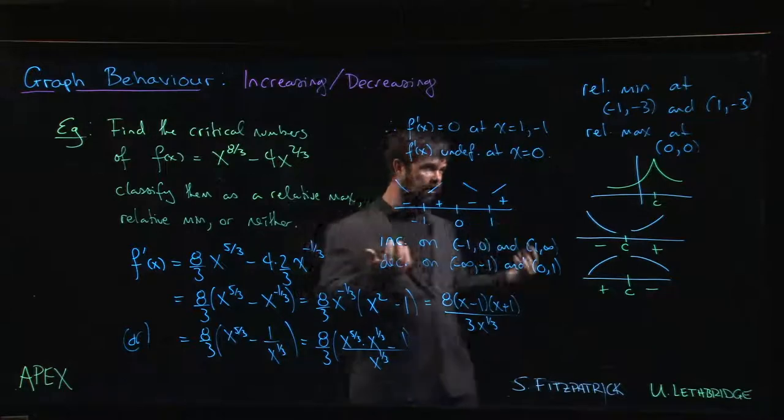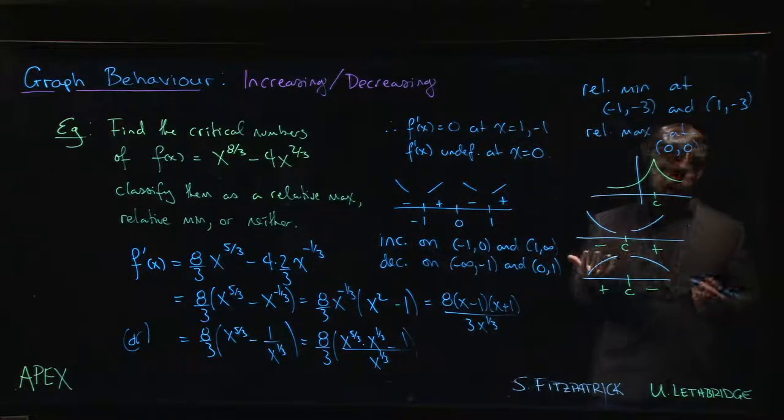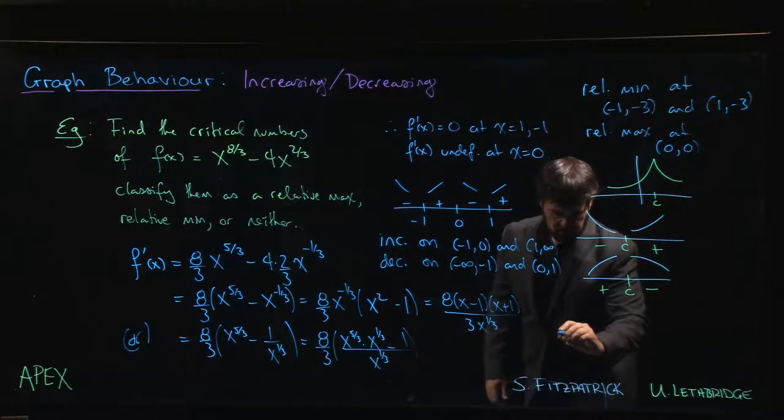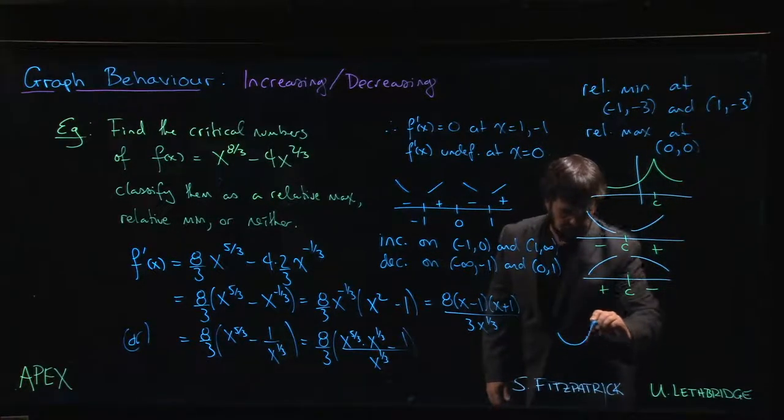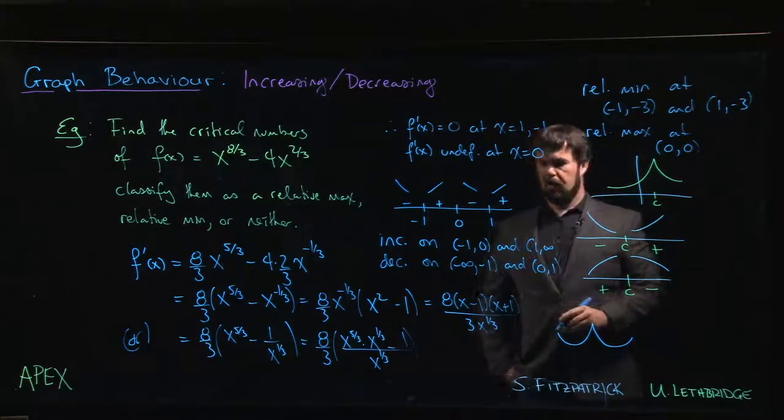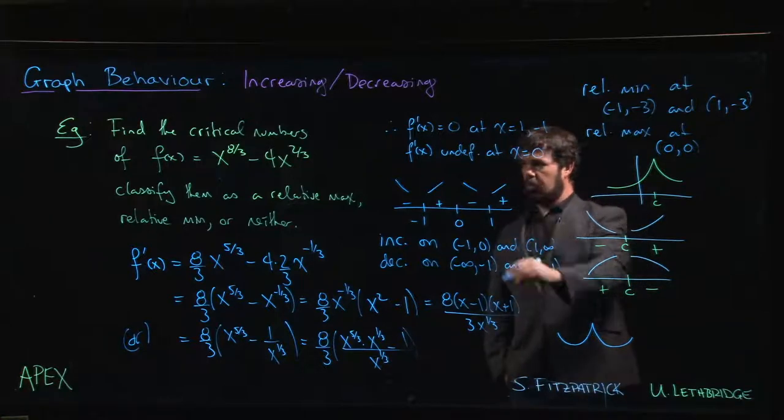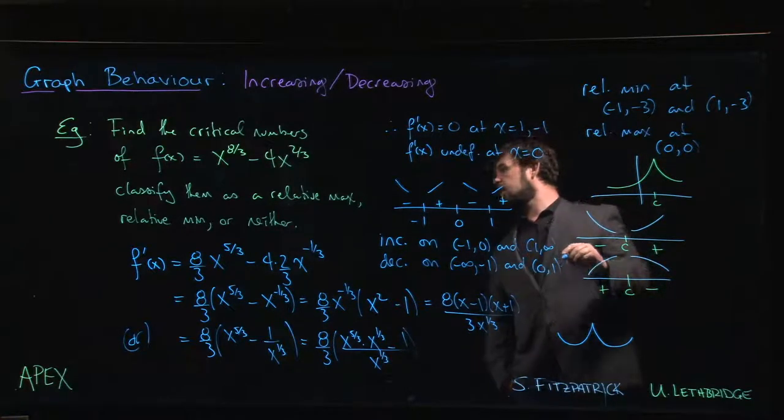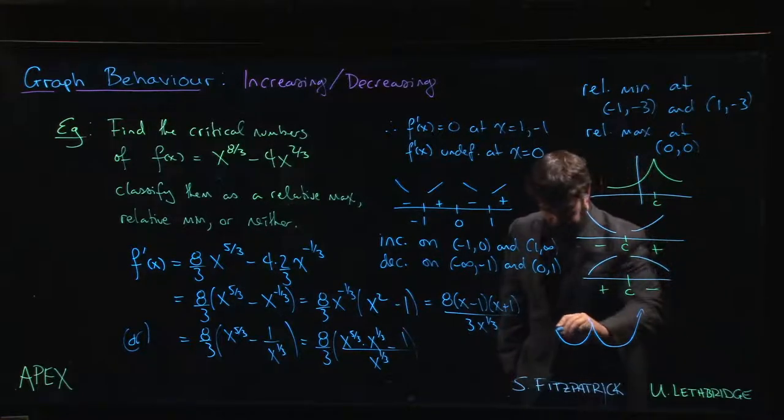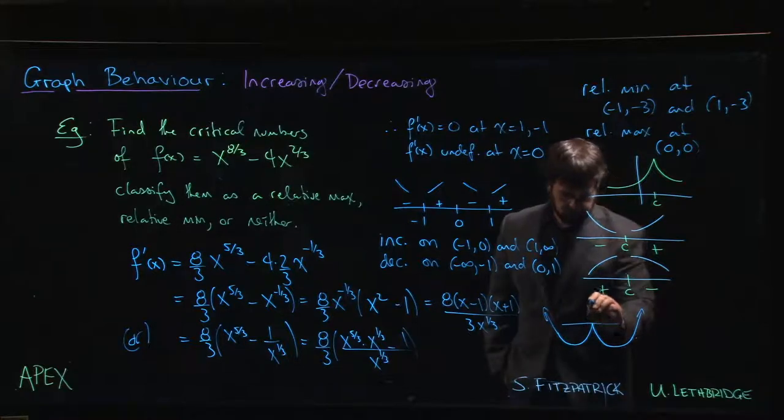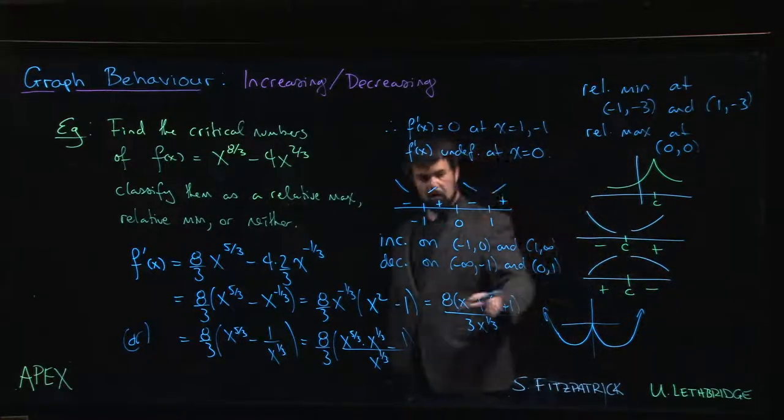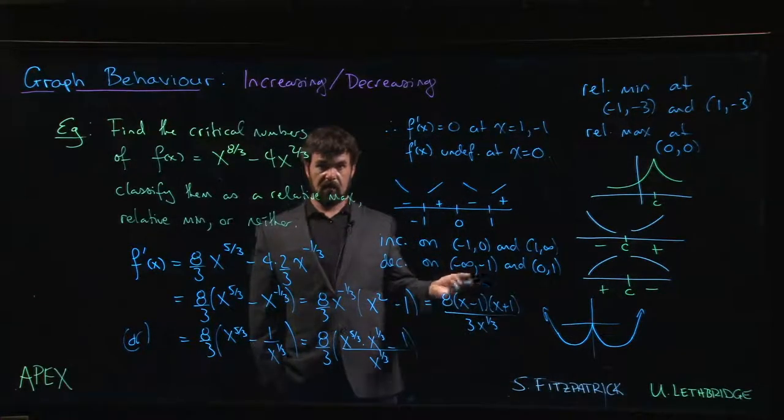From here we can move on and start actually getting an idea of what the graph of this thing is going to look like. There's going to be a minimum that looks like this, coming up to a maximum that looks like that, down to a minimum that looks like that. And then from there we'd have to figure out what happens as x goes off to infinity. Feel free to confirm on a graphing utility that you do indeed get something that looks like that.